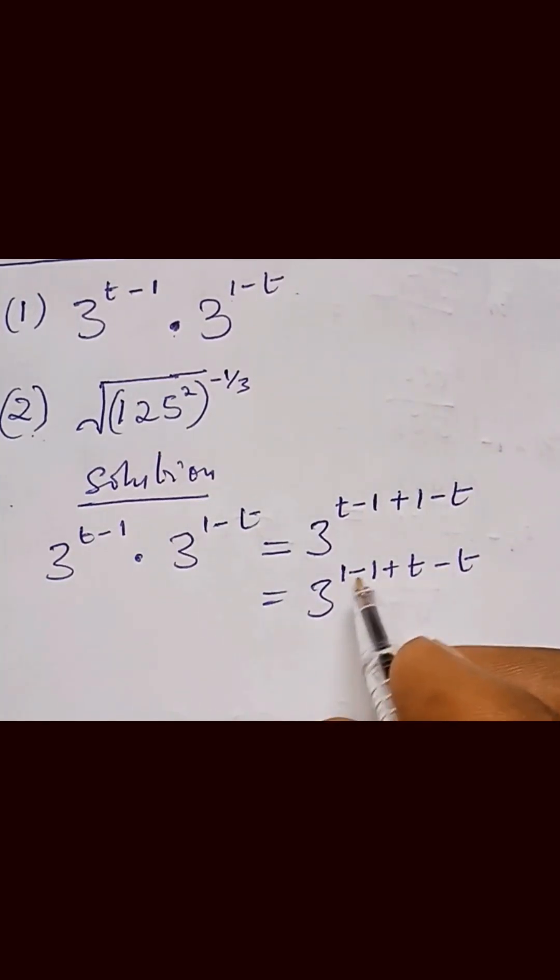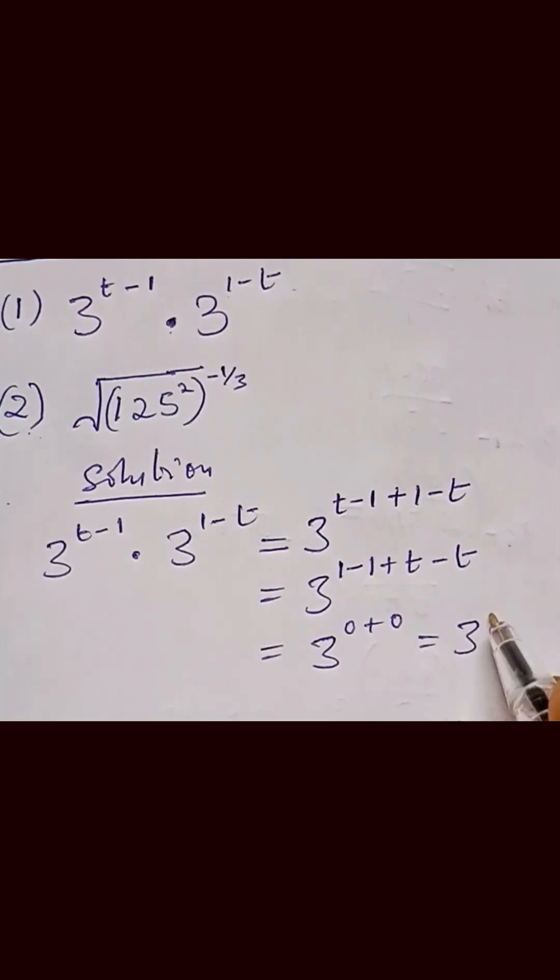As you can see, this will give us 0 and this will give us 0, so we have 3 raised to the power 0, and that will be equal to 1.